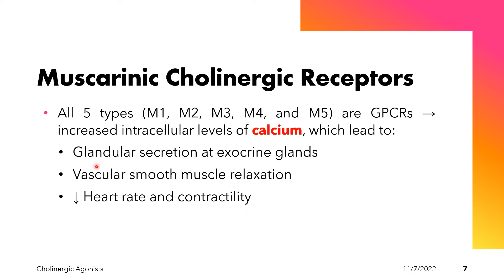Important terms related to heart function are chronotropy, inotropy, and dromotropy. Chronotropy refers to the heart rate, inotropy refers to the heart contractility, and dromotropy refers to the rate of conduction through the AV node. Activation of muscarinic receptors, particularly the M2 receptor, leads to a decrease in heart rate (negative chronotropy), a decrease in contractility (negative inotropy), and a decrease in dromotropy — meaning a decreased rate of conduction through the AV node.